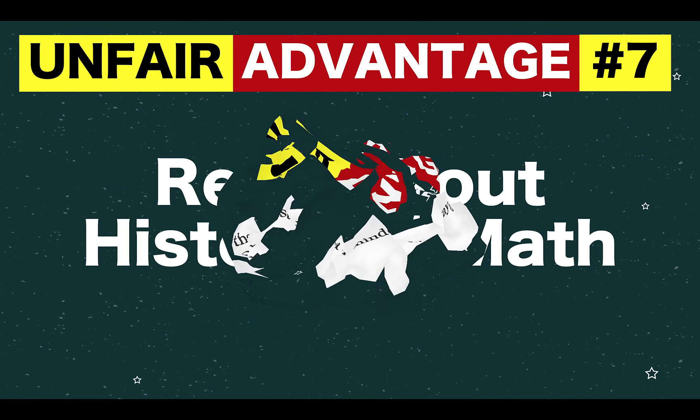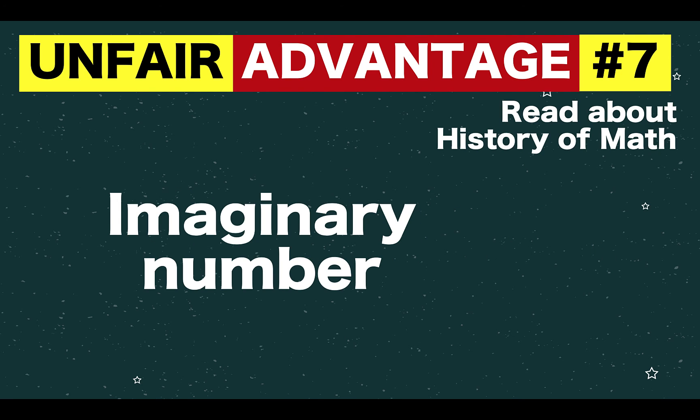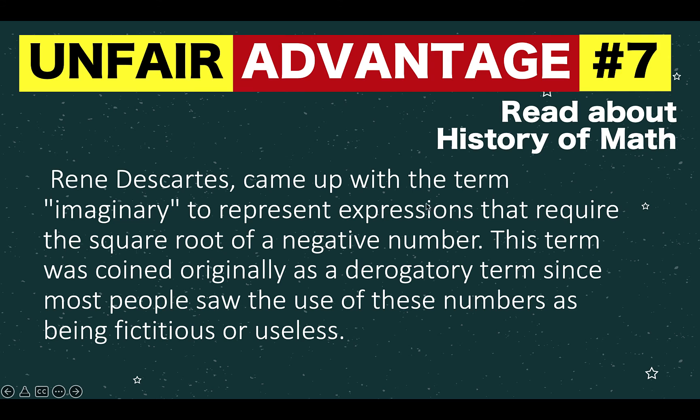Let's proceed to the seventh idea. Superior math students read about history of mathematics. For example, this concept of imaginary number is always controversial in mathematics. The famous mathematician René Descartes came up with a term imaginary to represent expression that required the square root of a negative number. And he coined this term imaginary as a derogatory term since most people saw the use of these numbers as being useless.